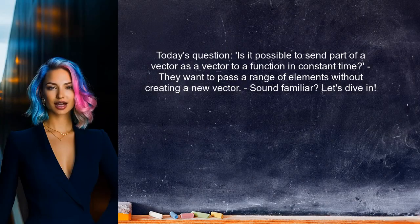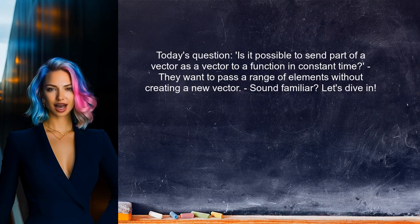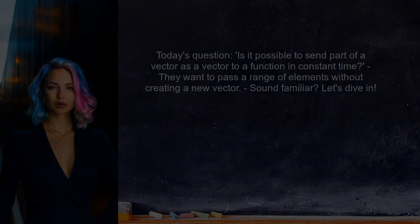Here's the specific question we're tackling today. One user asked: is it possible to send part of a vector as a vector to a function in constant time? They want to pass a range of elements without creating a new vector. Sound familiar? Let's dive into the details.